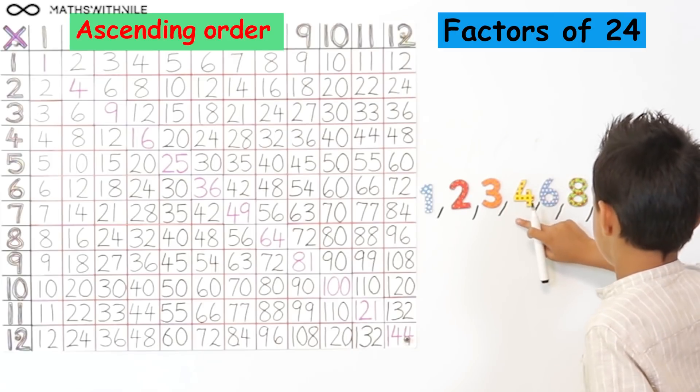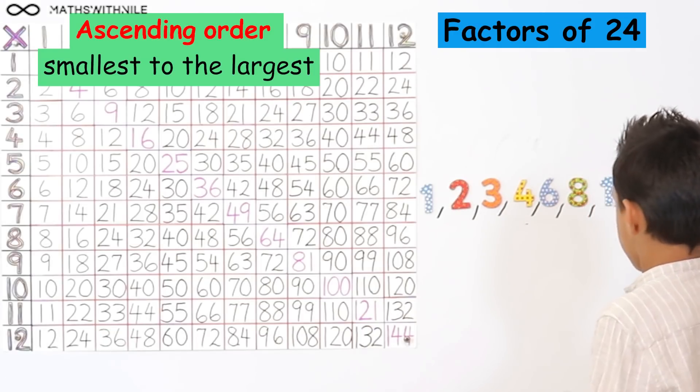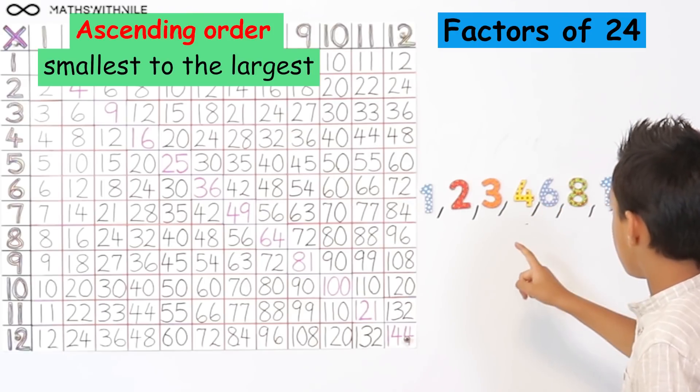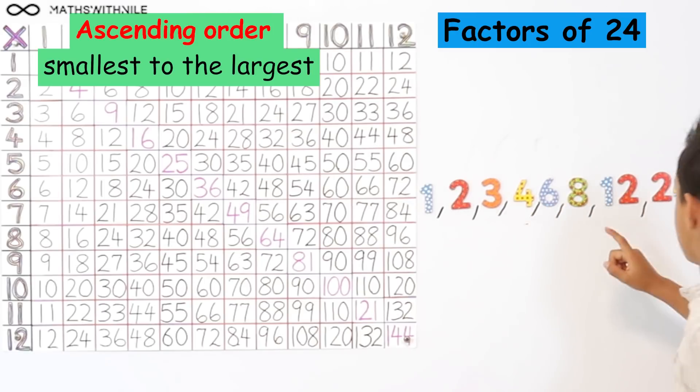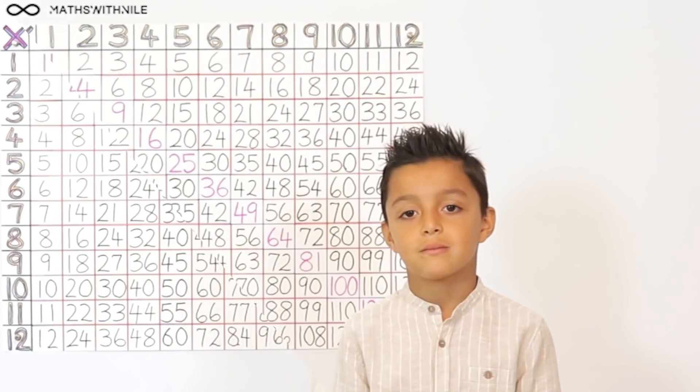Okay. So can you stand to the side and tell us the factors of 24 in ascending order? What does ascending mean? It means from the smallest to the largest. So 1, 2, 3, 4, 6, 8, 12 and 24. Okay. So those are the factors of 24.